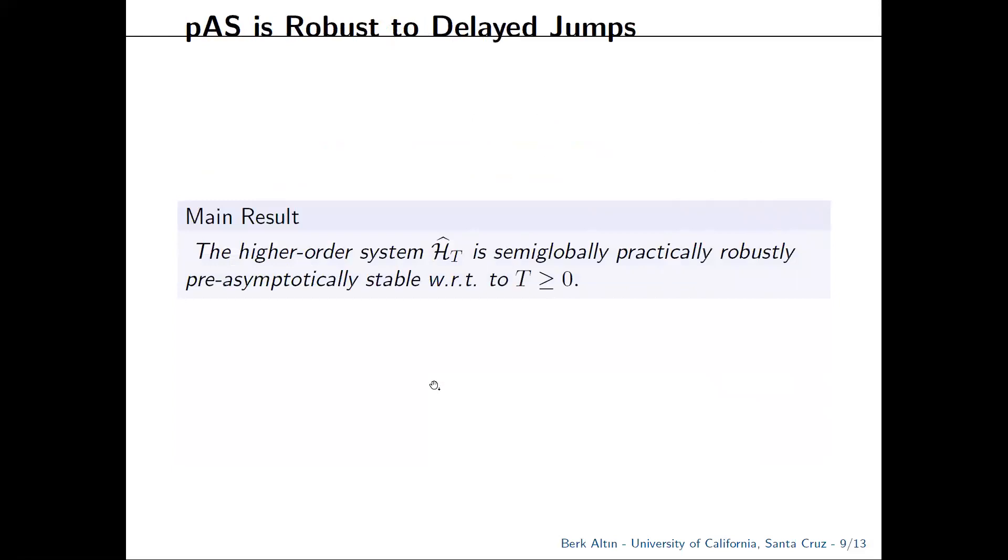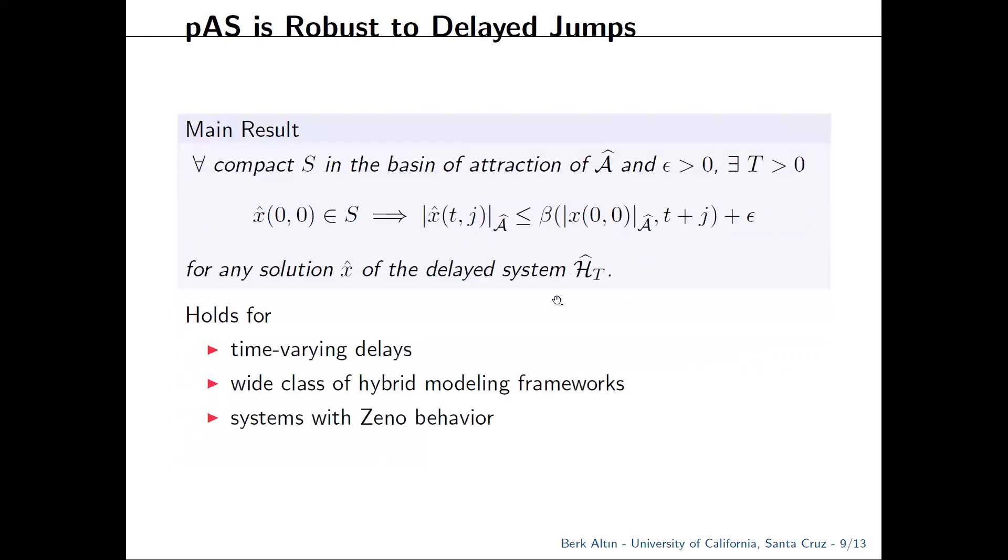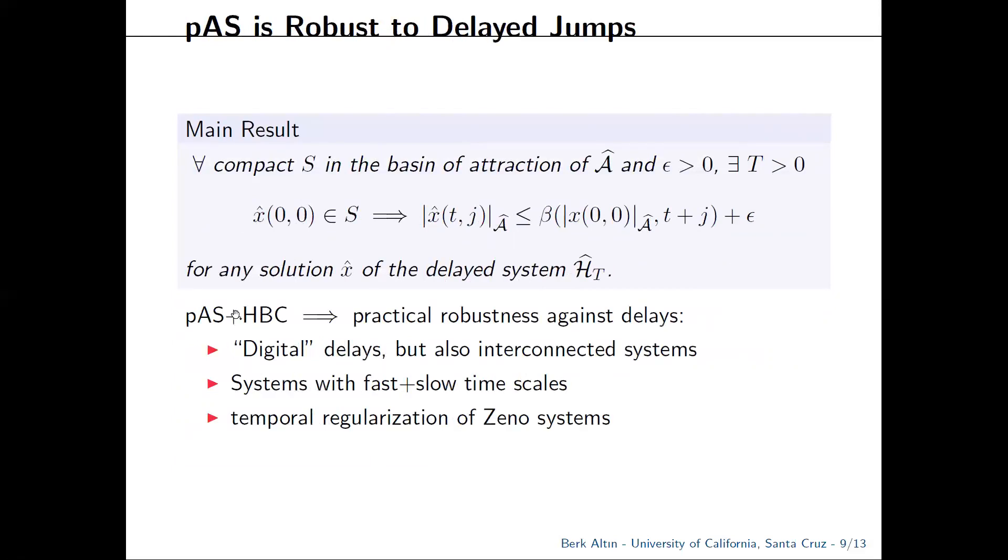This leads to our main result, which says that the delayed model is semi-globally and practically stable with respect to the duration of delays. More formally, for any compact set S in the basin of attraction of A and any positive epsilon, there is a positive t such that solutions of the delayed system converge to an epsilon neighborhood of our set of interest. I want to re-emphasize that this result holds for time-varying delays and for a wide class of hybrid-like phenomena, and also systems possessing Zeno behavior. The main message is that pre-asymptotic stability combined with hybrid basic conditions leads to practical robustness.